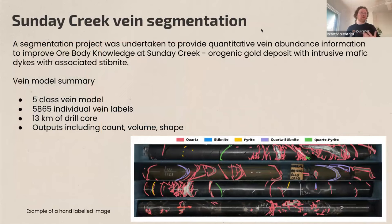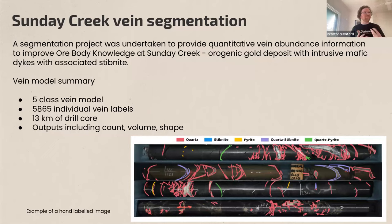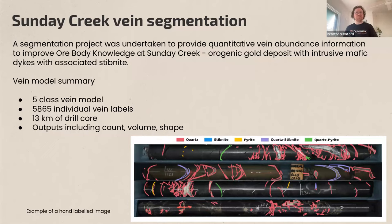The first case study is Sunday Creek, a development project in the Victorian goldfields — an orogenic gold deposit with intrusive mafic dykes and associated stibnite. We wanted to build a five-class vein model to determine the abundance of each vein type along with shape and size parameters across about 13 kilometers of drill core. This required manually labeling 5,855 individual veins by hand. The model outputs count, volume, and shape parameters — thickness, curvature, and regularity. The five classes are quartz, stibnite, pyrite, quartz-stibnite, and quartz-pyrite.